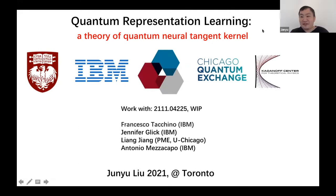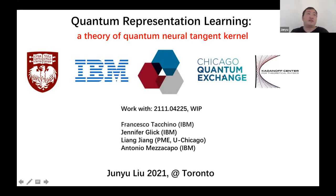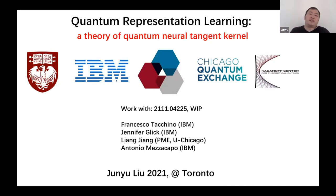Thank you very much for your invitation — it's my great honor and pleasure to be here. I'm a theoretical physicist currently working for UChicago and IBM. I used to be a grad student at Caltech and have a joint background in high energy physics and quantum information science. Currently I'm mostly working on quantum information science and its relation to physics in general. The topic I wish to talk about today is quantum machine learning using a theoretical method we call quantum neural tangent kernels.